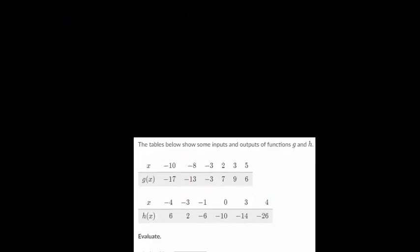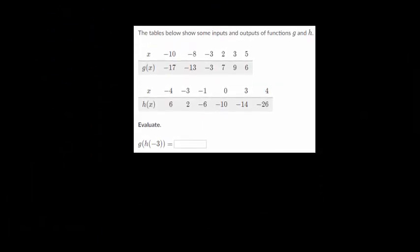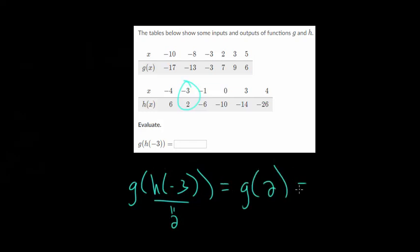Let's do one final question with another table. So we have g of h of minus three. So we start with the inside, h of minus three. So here's h, we find minus three, and that's got a y value of two. So we're going to replace this inside, h of minus three, with the value of two.